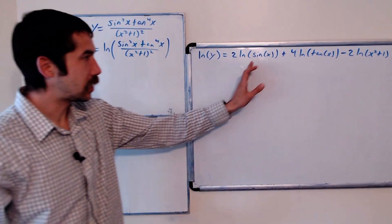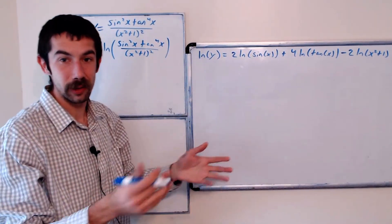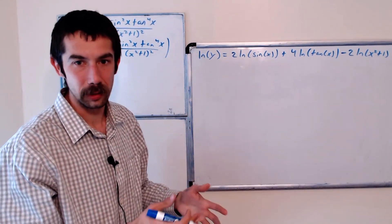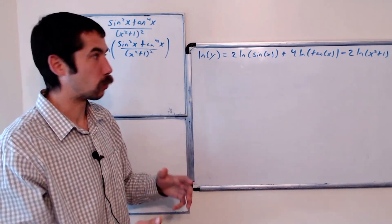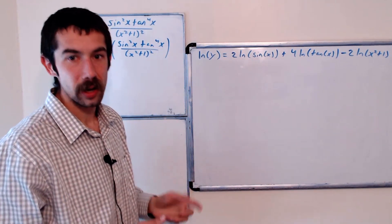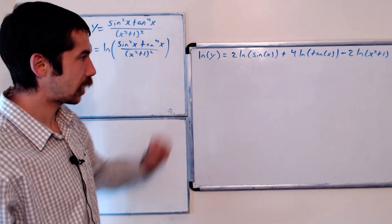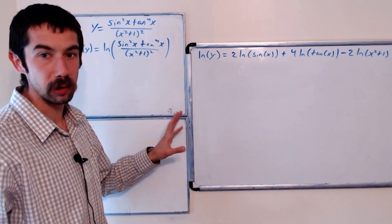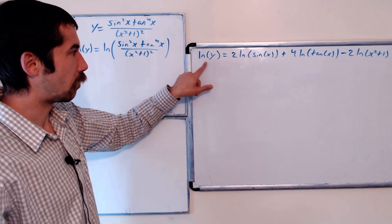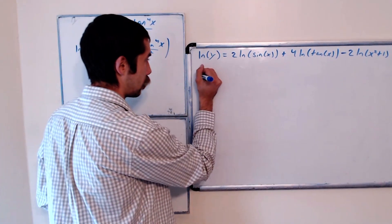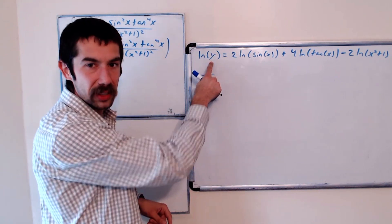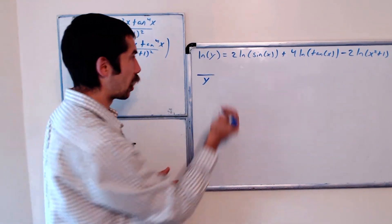And since each of these terms are separated by addition or subtraction now, we're not going to have to worry about the product or the quotient rule. We're just going to have to use the chain rule. So let's evaluate the derivative of both sides. The derivative of ln of y is 1 over y times the derivative of the inside, which is y prime.